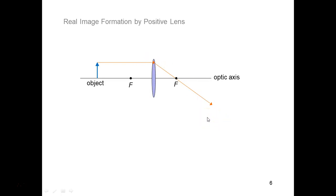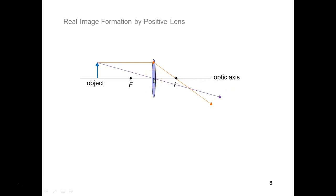The second ray comes from the same point on the object — the tip of the arrow. It always goes through the intersection point of the optical element with the axis. In the thin lens approximation, this ray is going to go straight through, right through the middle of the lens. In our ray trace, we're going to assume that. It is, in fact, a really good approximation in the thin lens approximation.